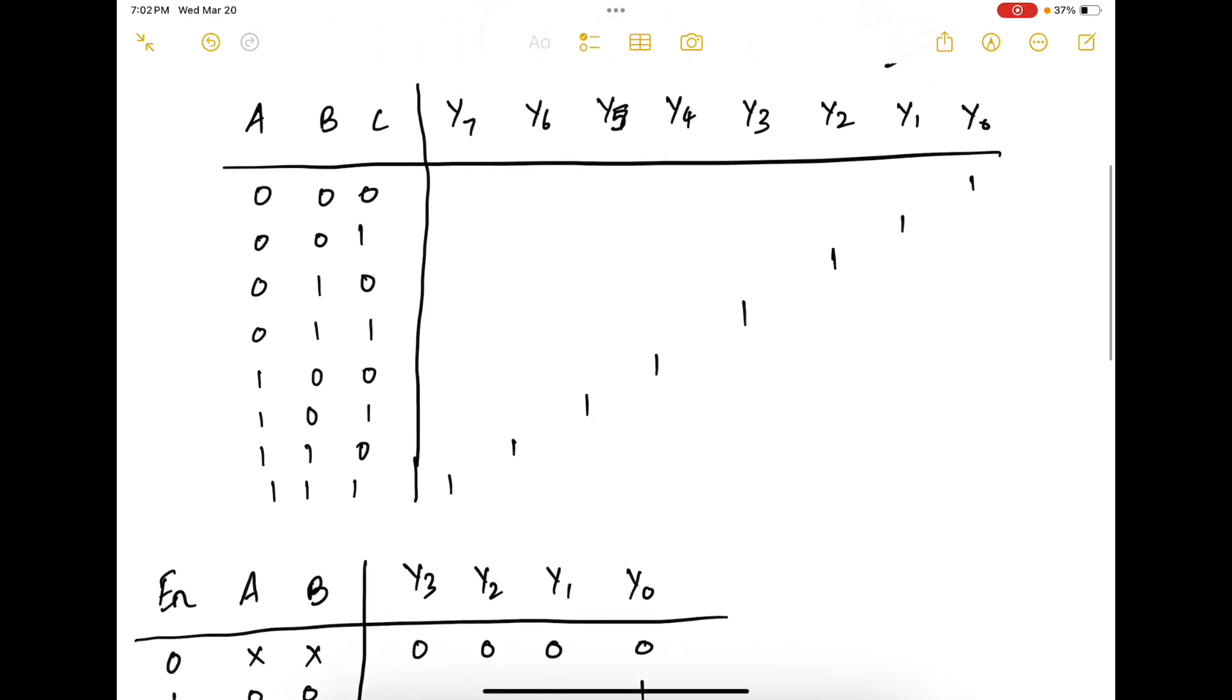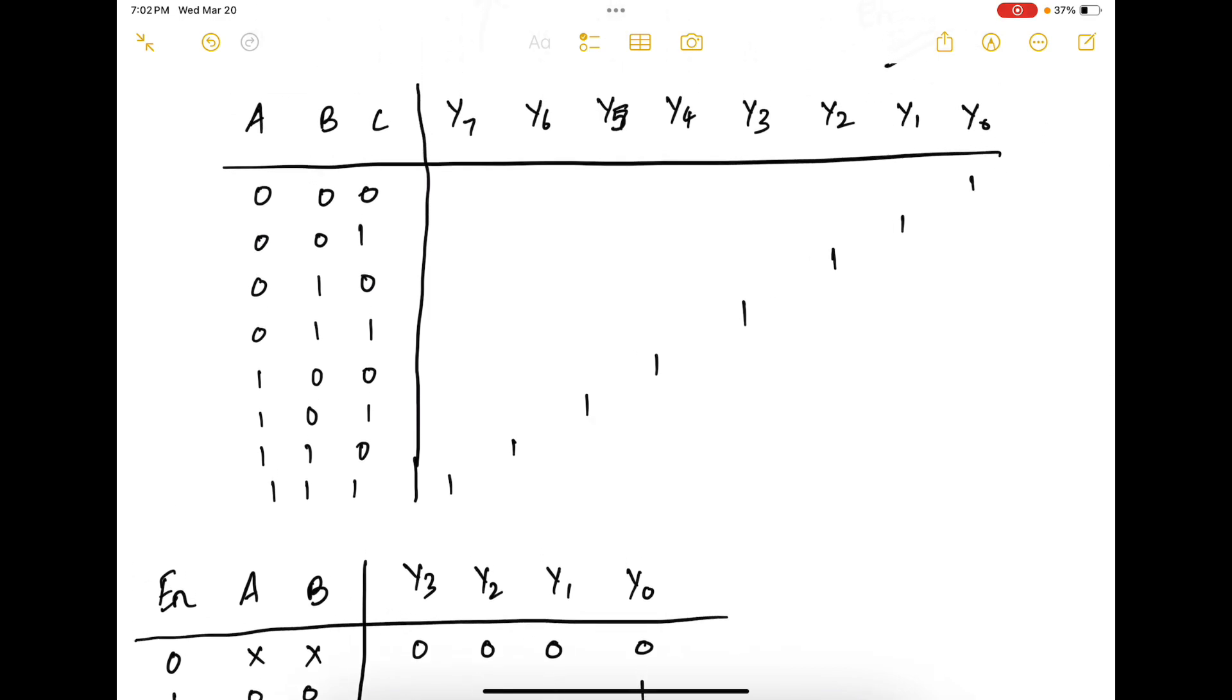Now what I am going to do is look at the truth table for the 3-to-8 decoder. This can form one decoder because it has all the four combinations, 0, 0, 0, 1, 1, 0 and 1, 1. And this can form the other decoder because it has four combinations.